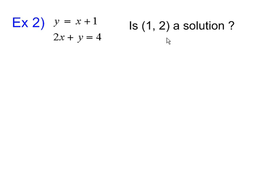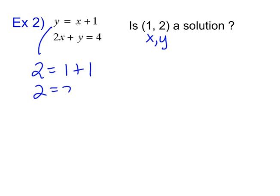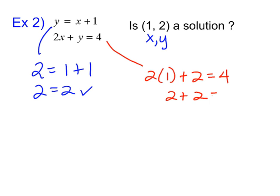Let's practice a few more times. Here we have an x and a y, and we're going to plug it in and see if it works. We just have to make sure we're putting them in the right place. Two equals one plus one — well, two does equal two, so that's looking very good. Then we have two times one plus two: two times one is two, and two plus two equals four. So again this works out — yes, it's a solution.